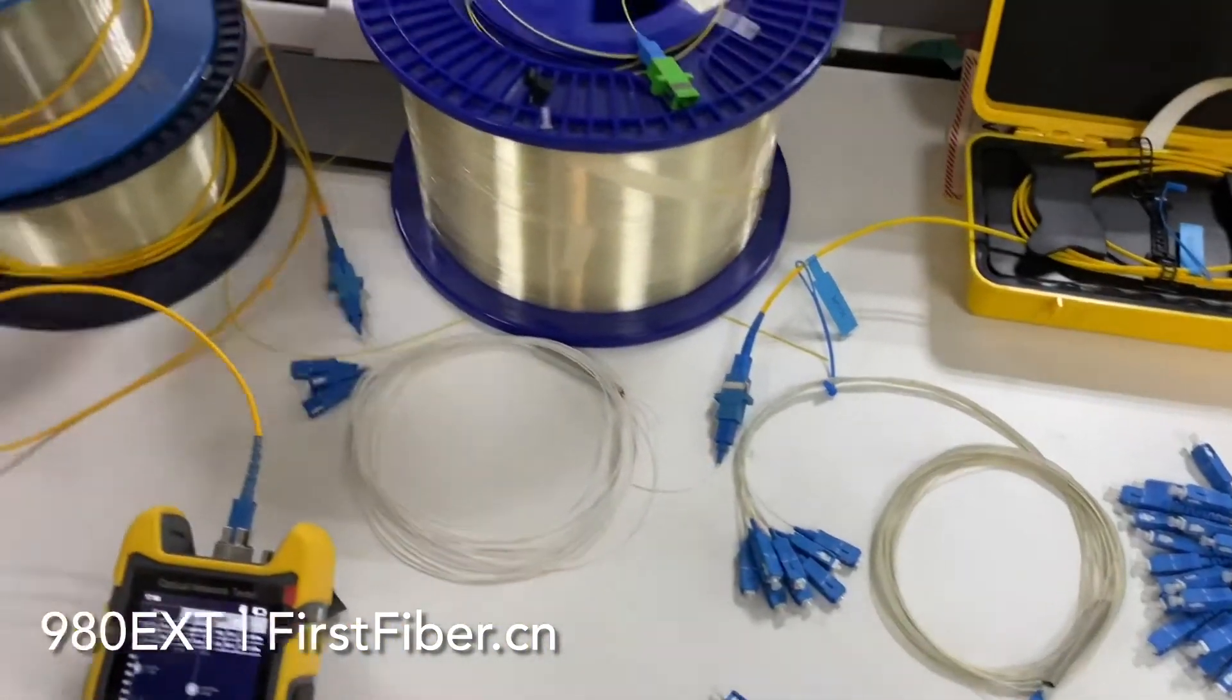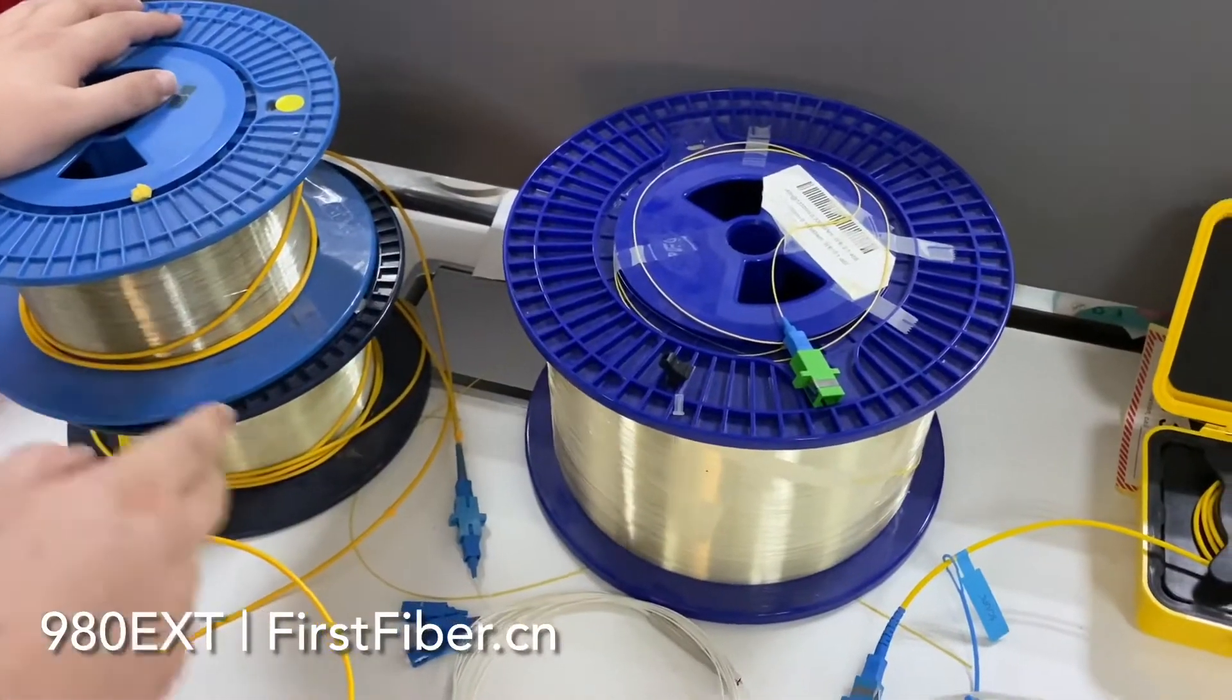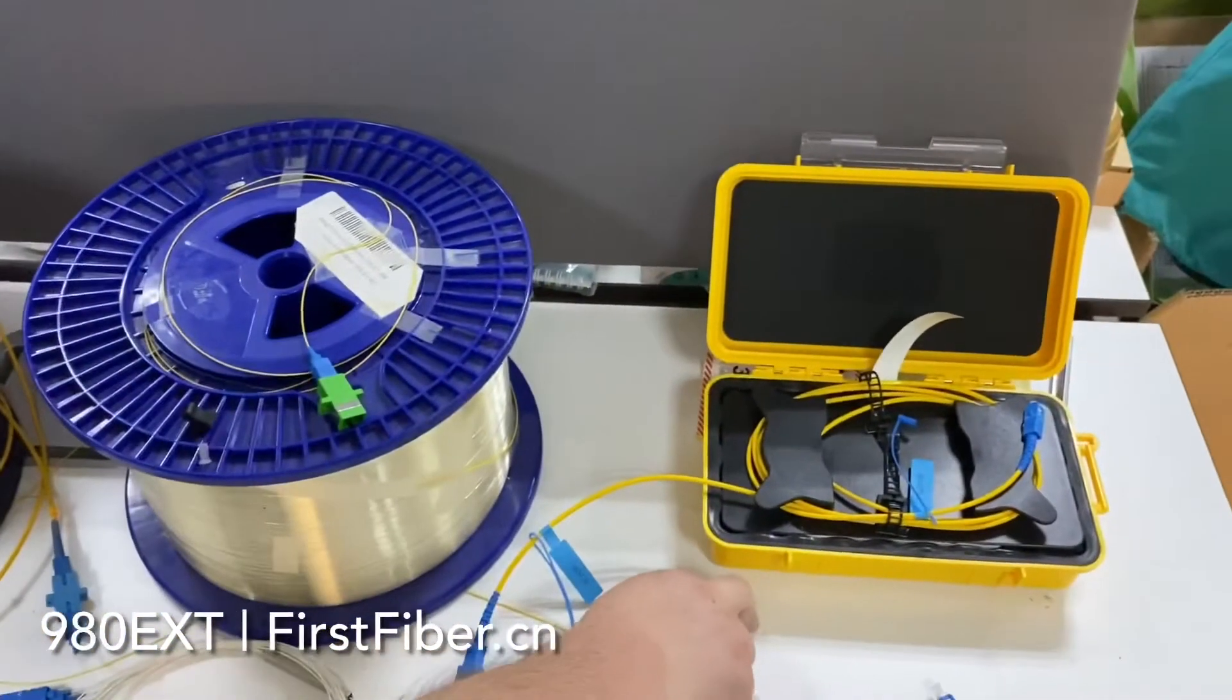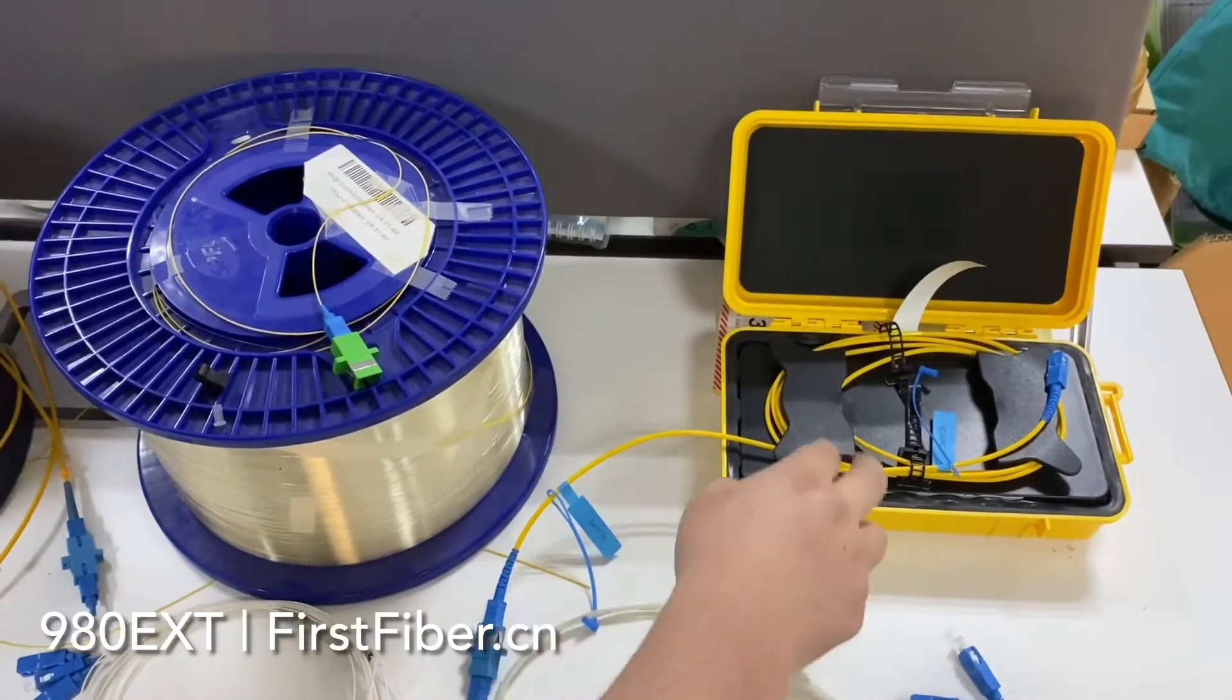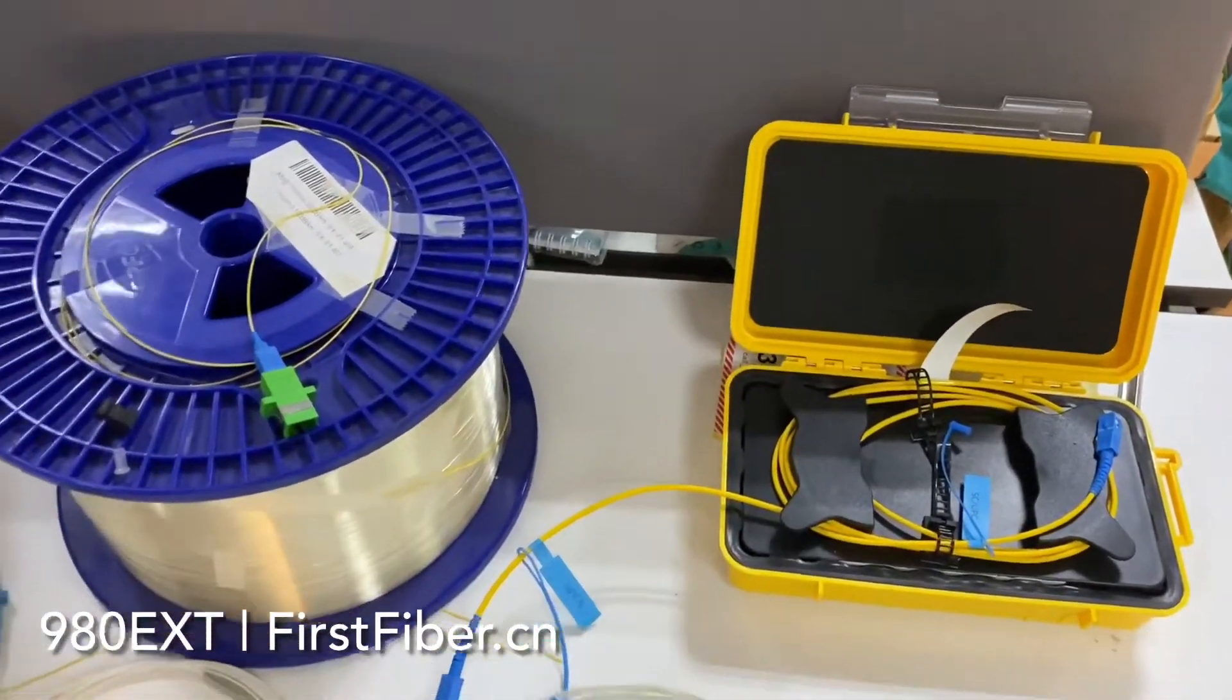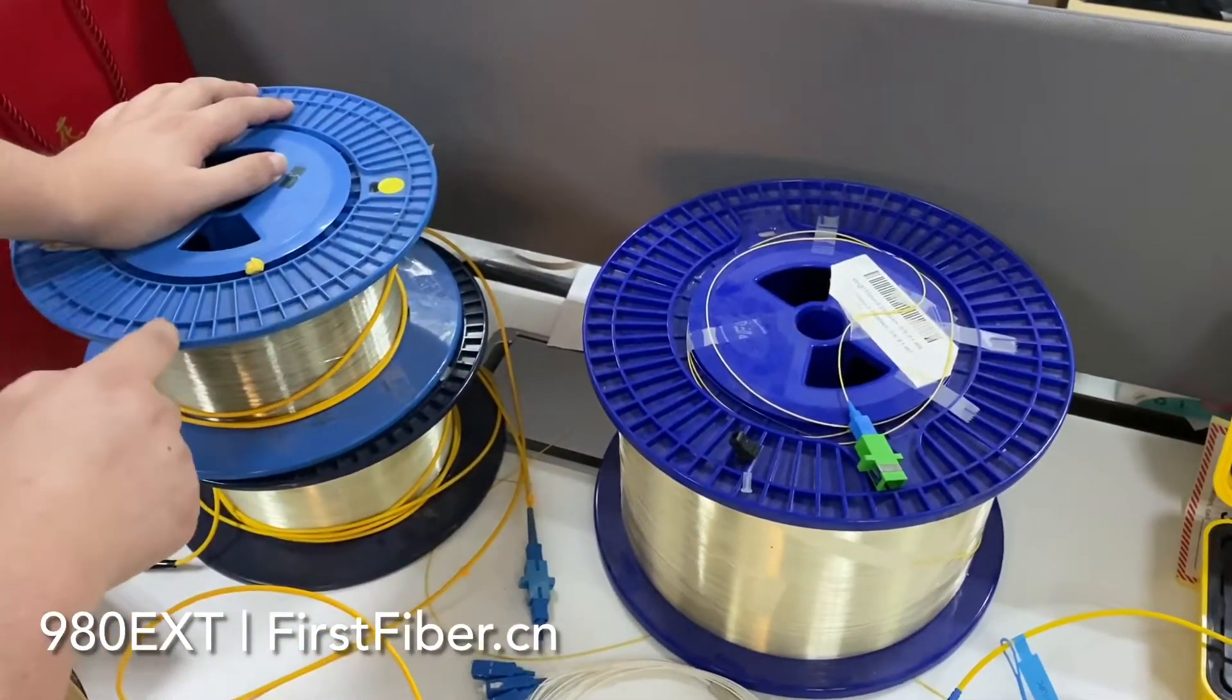And also I have 2 bare fiber rails and 1 fiber cable box. The cable distance is 1 km, these two together is about 2 km.